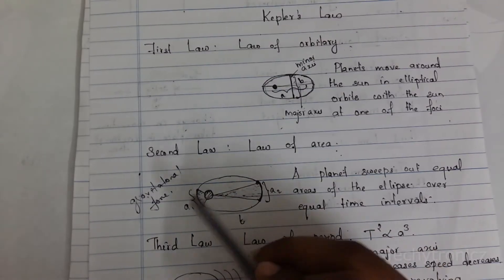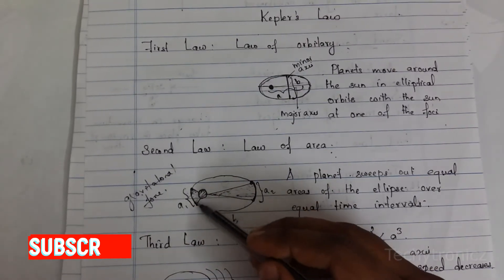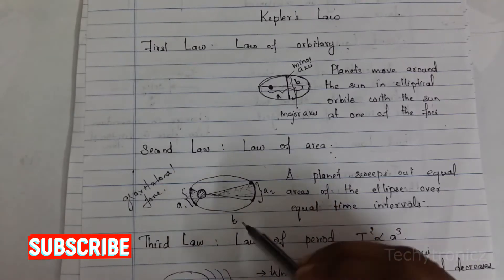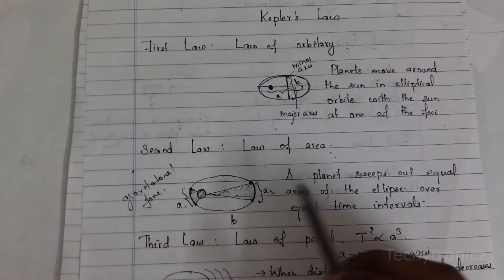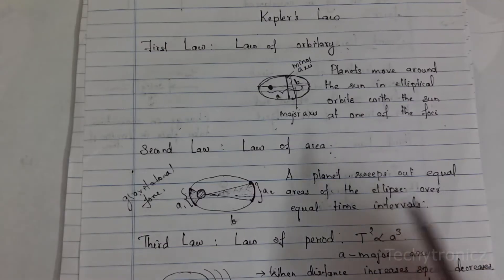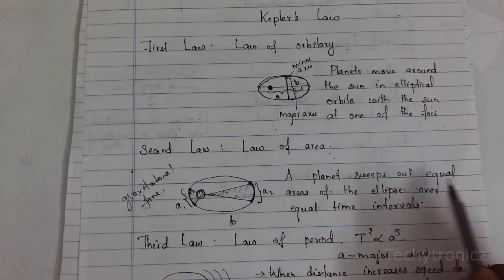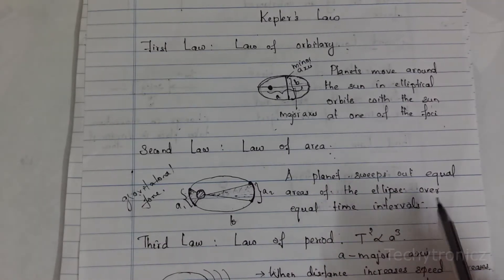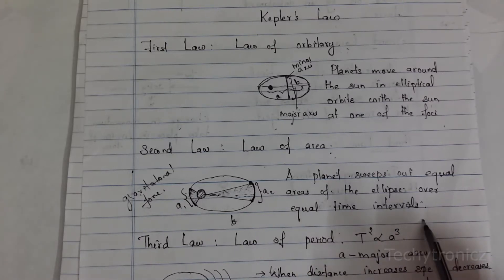So a planet sweeps out equal area of the ellipse over equal time intervals.